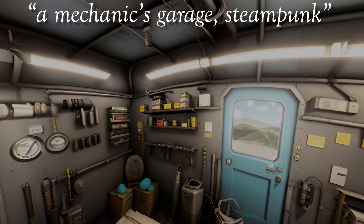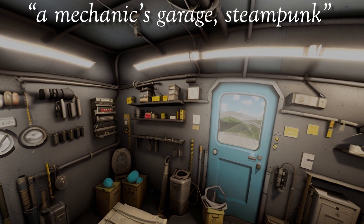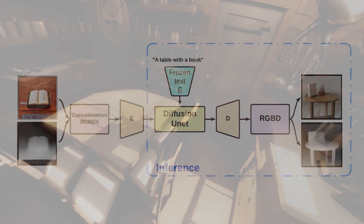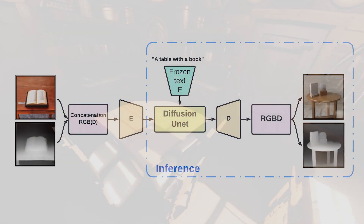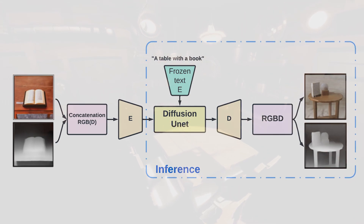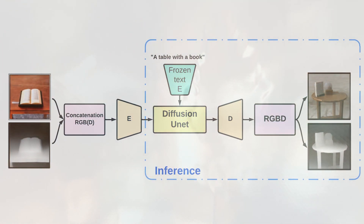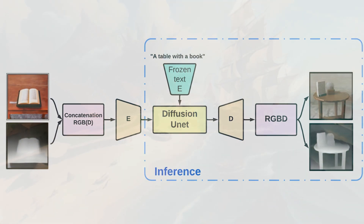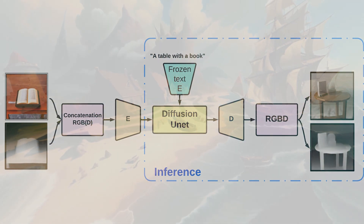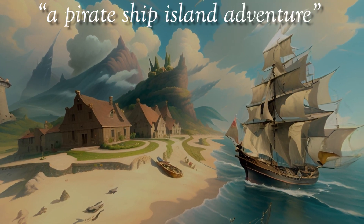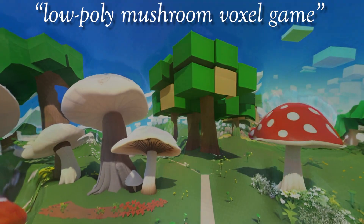Depth Fusion showcases the power of our LDM 3D diffusion model in generating 360 views from text prompts. Using text prompts provided by the user, the LDM 3D diffusion model generates a 2D RGB image and its corresponding relative depth map, providing a complete RGB-D representation corresponding to the text prompt.